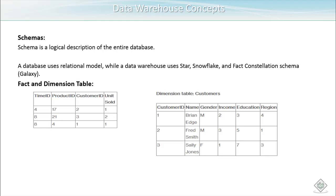Now let's look at schemas. A schema is basically the logical description of the entire database — it tells us how each table is connected to the others and what the relationships between the data are. The operational database uses the ER (entity relationship) model, while a data warehouse uses the star schema, snowflake schema, and fact constellation schema, which is also called the galaxy schema.